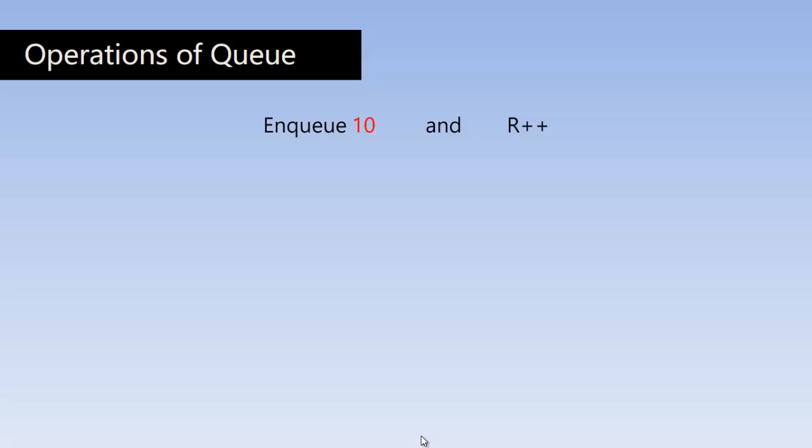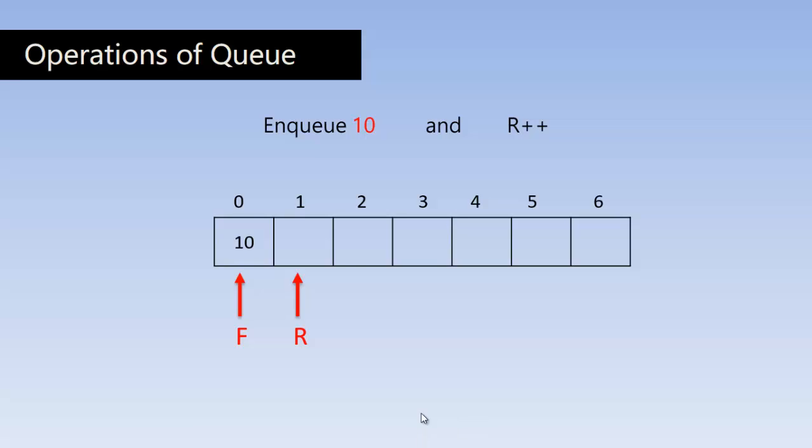So first let us enqueue the element 10 and increment R. Here R means the rear end pointer. So when we input the element 10 that will go into the first position which is 0th index. So here 10 will occupy this place and the front pointer will point to this end. So front pointer always points to the first element and rear pointer will always point to the last element. In this case we are incrementing it to the next position. So the position where it is incremented will be occupied by the next element. So it is always important to increment the rear pointer to make room for the next element.